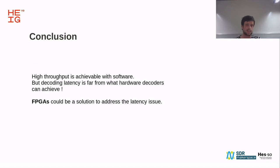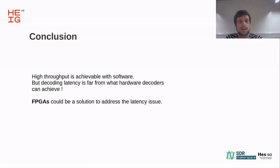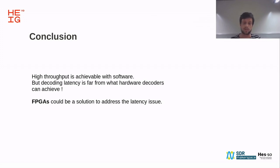In conclusion, high throughput is really achievable with software — we saw that with multi-threading. But decoding latency will never reach hardware decoder levels; some hardware decoders can perform belief propagation iterations in only two clock cycles, which is never achievable in software. FPGAs could be a solution, since they are reprogrammable and well-suited for software-defined radio — you could implement any hardware accelerator on an FPGA and couple it with a software solution on a system-on-chip.